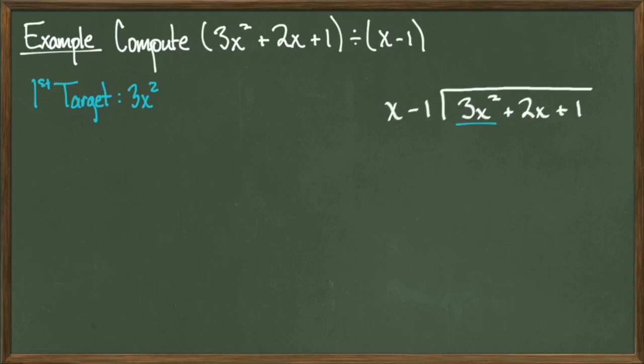The leading term of our polynomial is 3x squared, so it's our first target. Remember that we call it a target because the goal is to multiply the divisor by a mystery term that we will come up with so that the target term 3x squared appears. The divisor is x minus 1, so what do we multiply this by to get 3x squared?